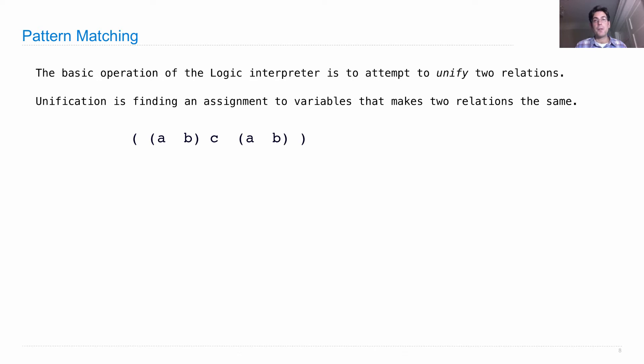So here's one relation which has some nested structure in it, and here's another relation that has less nested structure. The purpose of unification is to say that there is a way in which both of these could be the same, and that would happen if for every question mark x I substituted it with the list a, b.